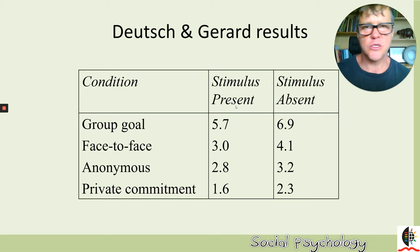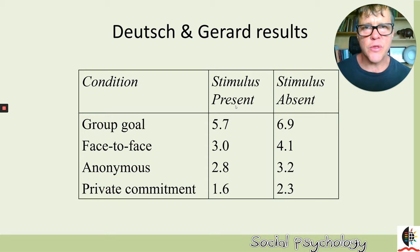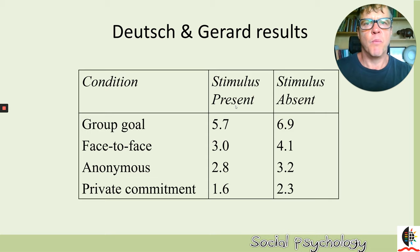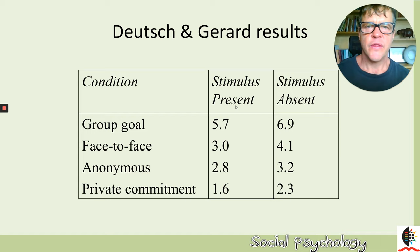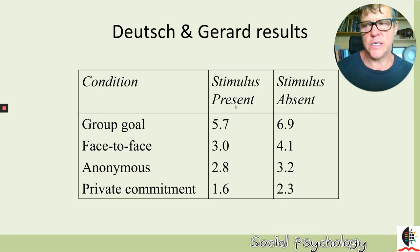Looking at the results: compare the group goal condition to the standard face-to-face condition. In the group goal condition, groups competing to make as few errors as possible actually made more errors — because there must have been stronger normative pressure for conformity within those groups. Even knowing the answer was wrong, you didn't want to stand out as different. So competition produced more conformity: the stronger the group pressures, the more conformity and the greater the level of error. In the anonymous and private commitment conditions, where there is very little normative influence, there were very low levels of conformity.